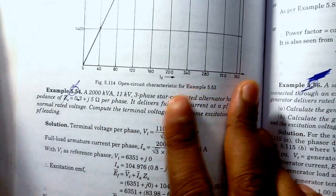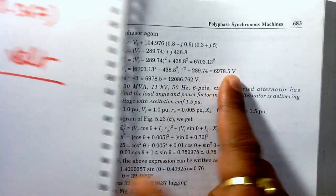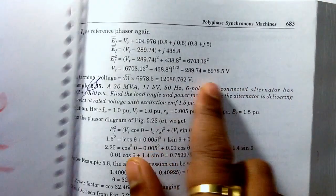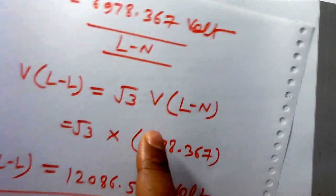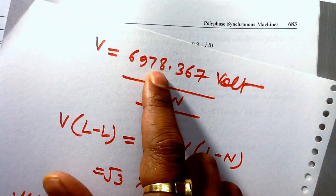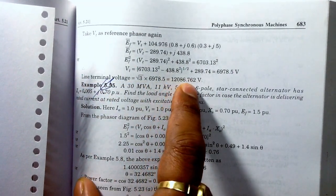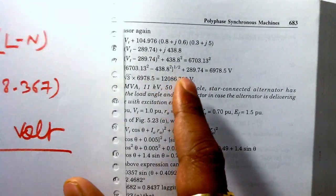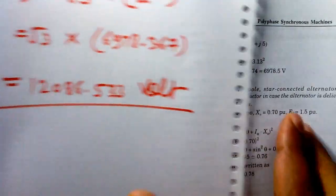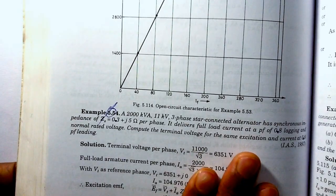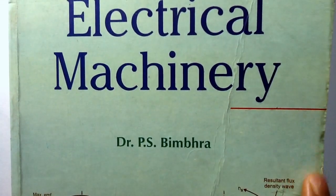According to the book, the answer is 6978.5 V for the line-to-neutral terminal voltage. My calculated answer is 6978.367 V, and the line-to-line terminal voltage is 12086.762 V. There is a small deviation from the printed answer, but this completes the solution for example number 5.54 on page 682 of 'Electrical Machinery' by Dr. P.S. Bimbra.